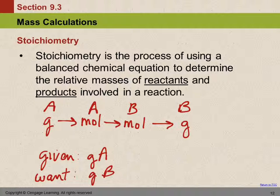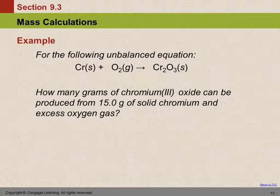Dimensional analysis is really useful for these calculations—if you haven't figured that out yet, now's the time. For the following unbalanced equation: how many grams of chromium-3 oxide can be produced from 15.0 grams of solid chromium and excess oxygen gas? This example is more difficult than I would give on an exam, but it's useful because it helps us review balancing equations. The first thing we have to do is make sure the equation is balanced—and we're told this one is unbalanced, so let's balance it.